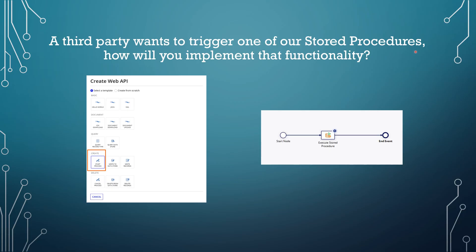Next question: a third party wants to trigger one of our stored procedures — how will you implement that? We will create a Web API of the start process type. That Web API triggers a process model, and we give the endpoint to the third party along with the authentication method, which can be API key authentication. Inside the process model, we use the Execute Stored Procedure smart service, where we configure the stored procedure that the third party wants to trigger.